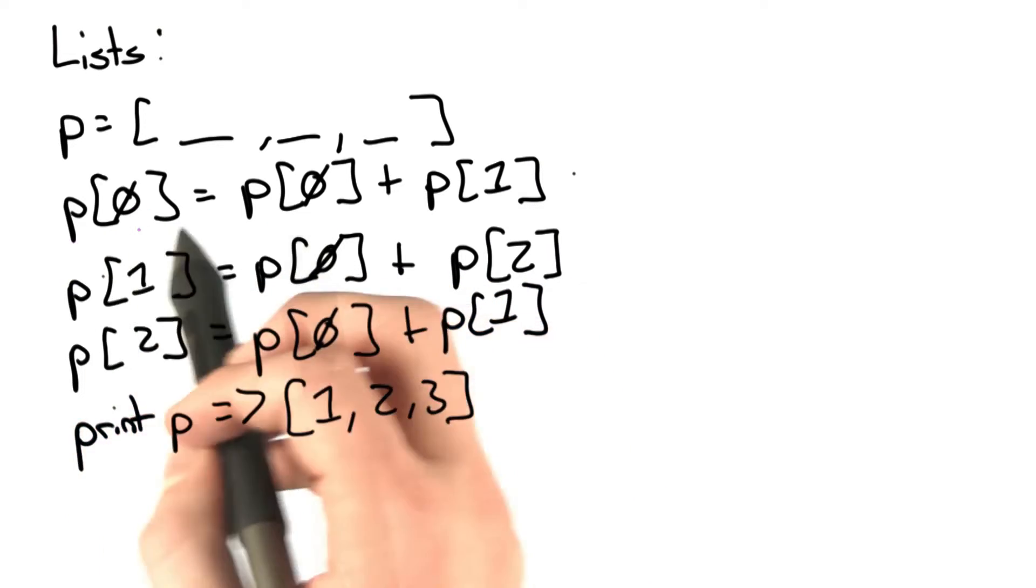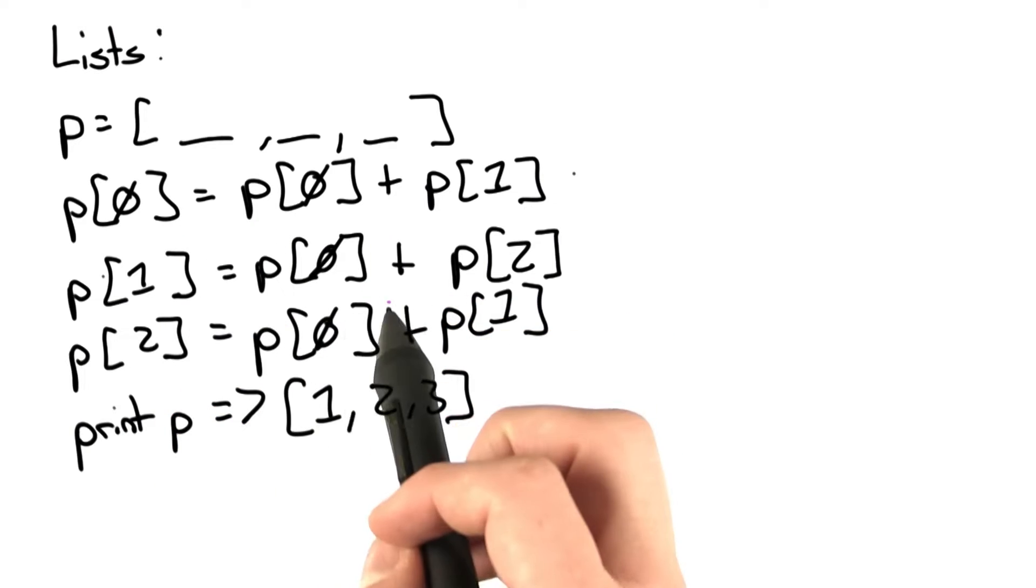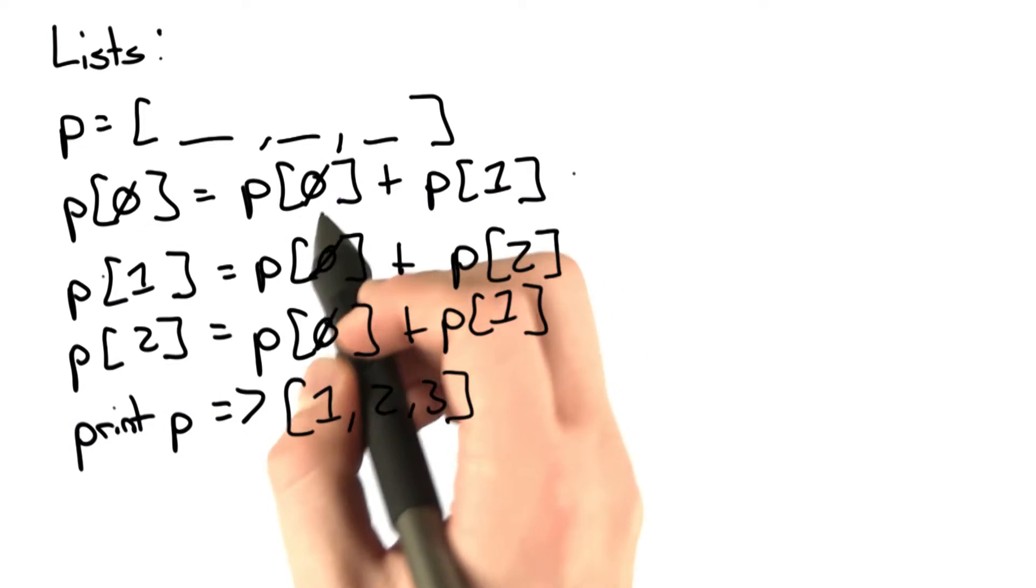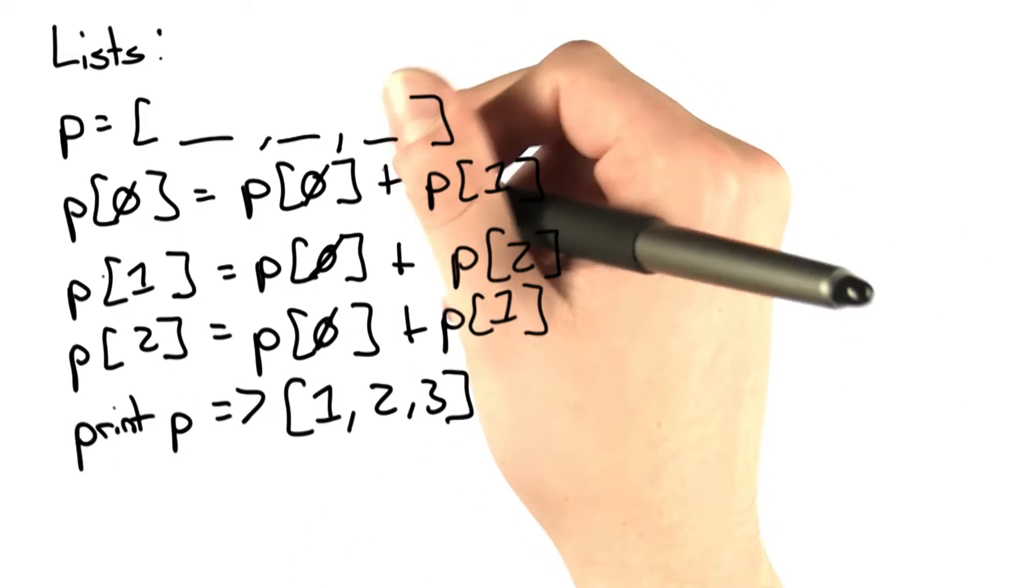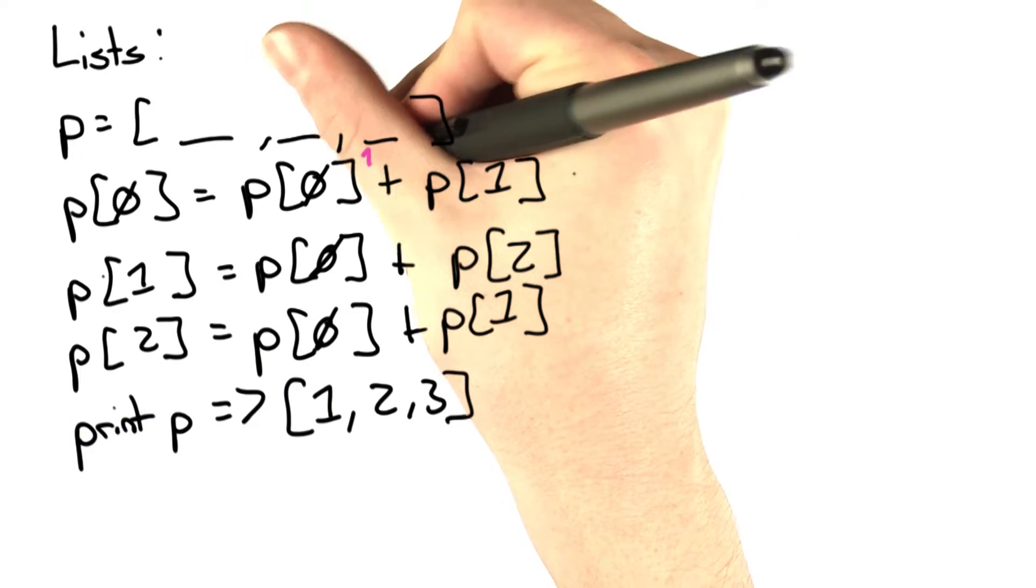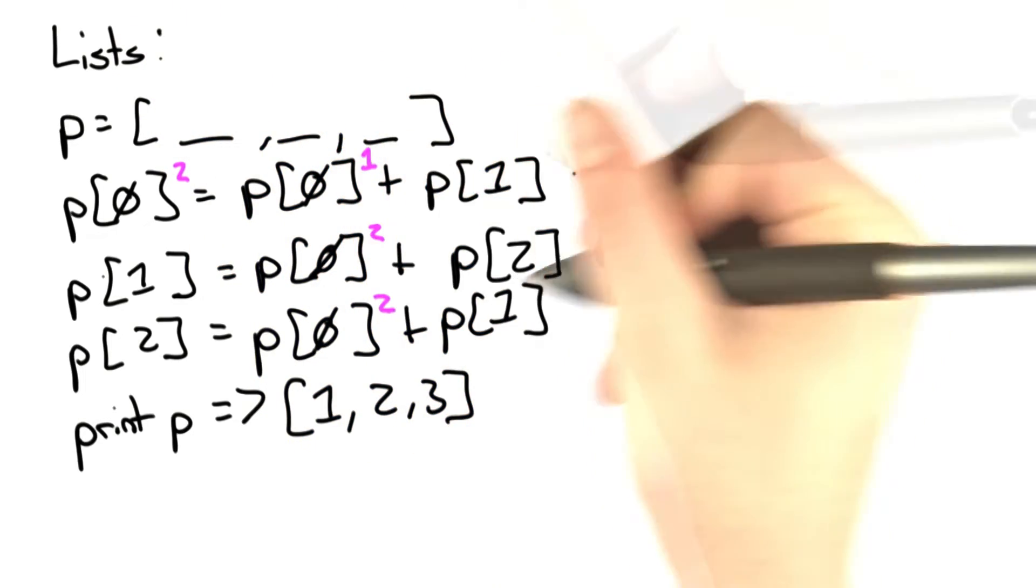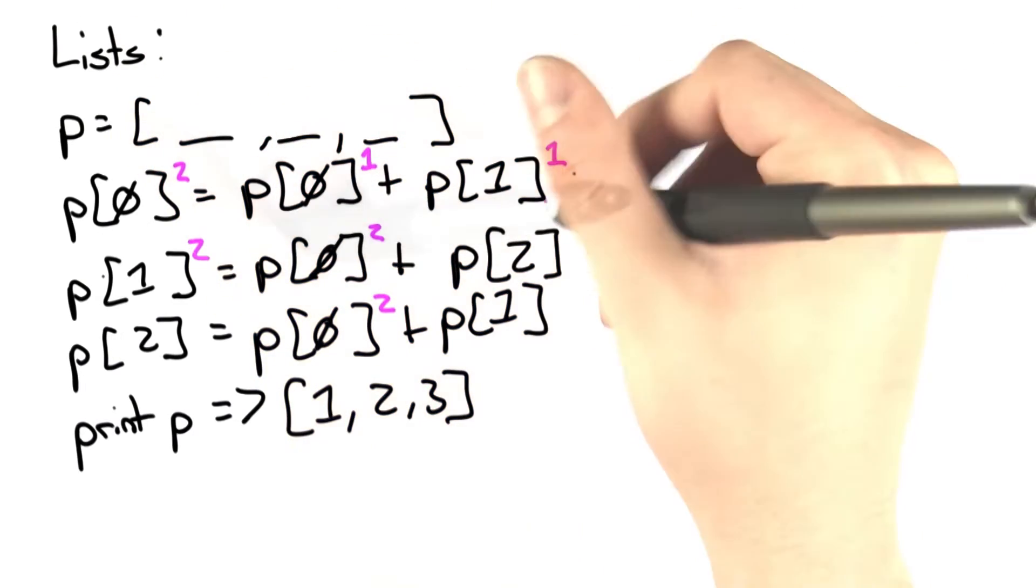So although this says p[0], and this says p[0], and this says p[0], this p[0] is actually a different value than these three. It'll help us think through it if we actually label. So we'll say this is the first one, the second, first, second.